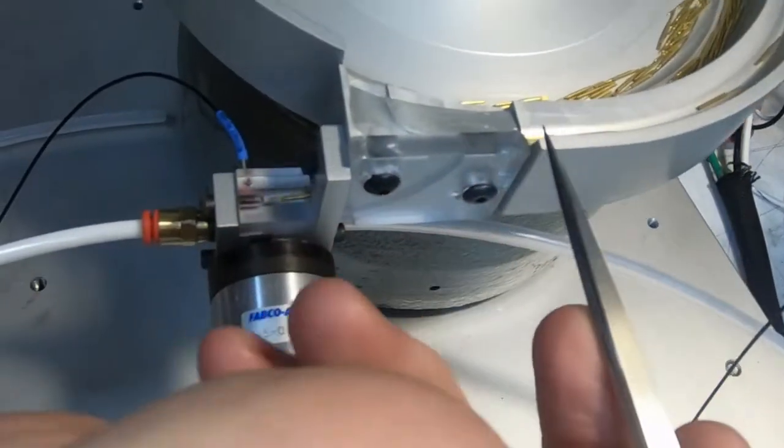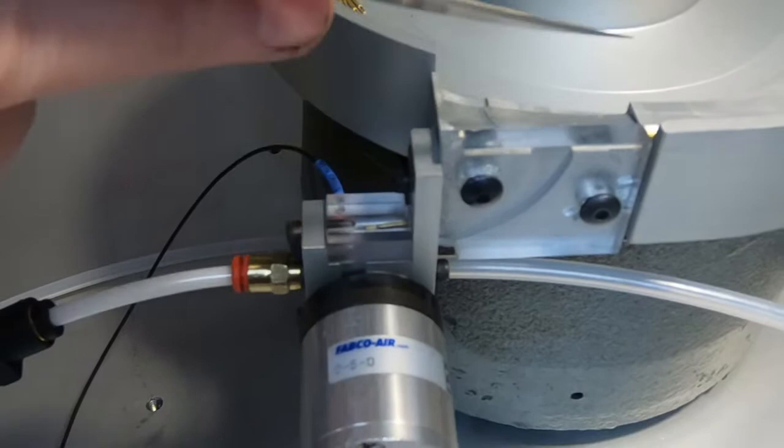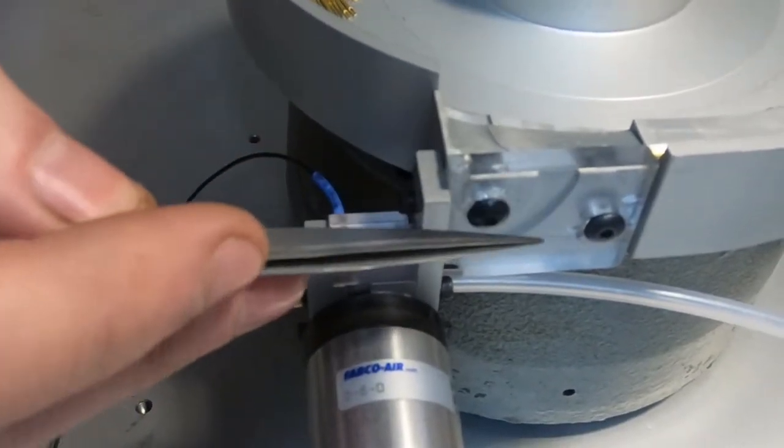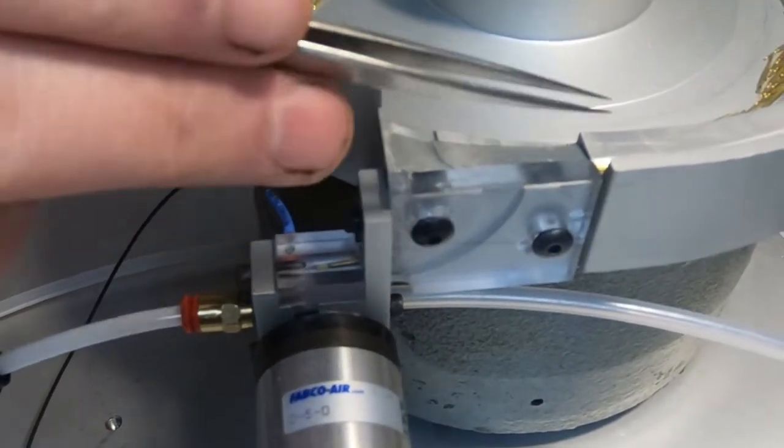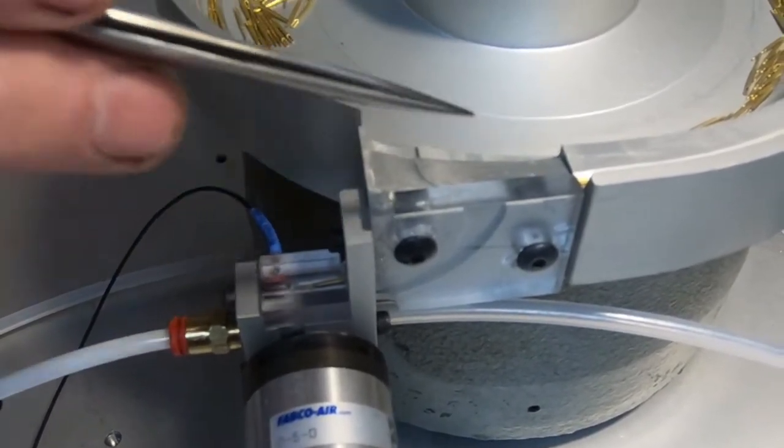The contacts then proceed forward to our orienter. This orienter design forces the contacts to fall solder cup first into the slot, regardless of whether they arrive at the slot solder cup forward or pin side forward.